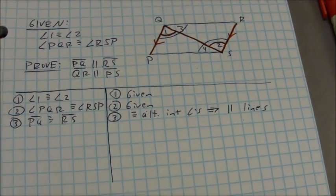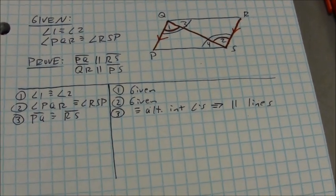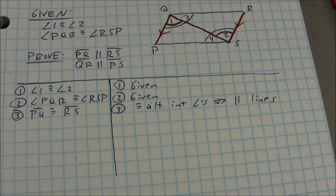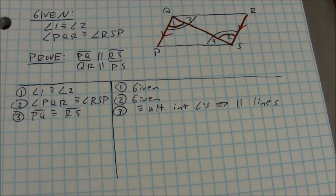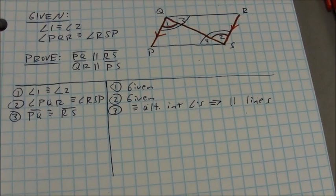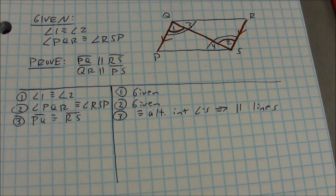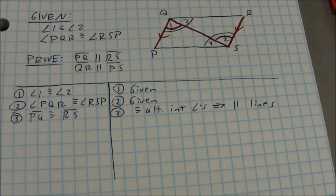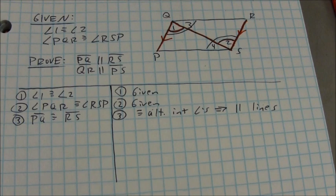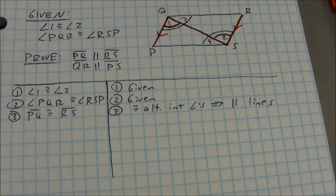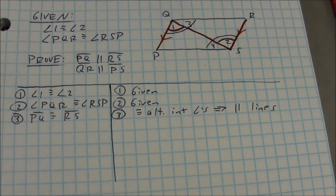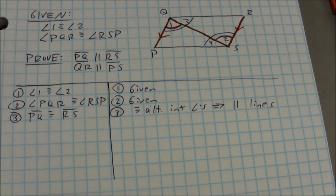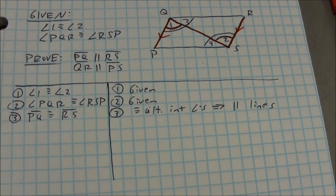The reason could be written in an if-then form in various ways. You could say: if alternate interior angles are congruent, then the lines forming them are parallel — though technically there's a transversal involved. Or more precisely: if two lines are cut by a transversal such that their alternate interior angles are congruent, then the lines are parallel.